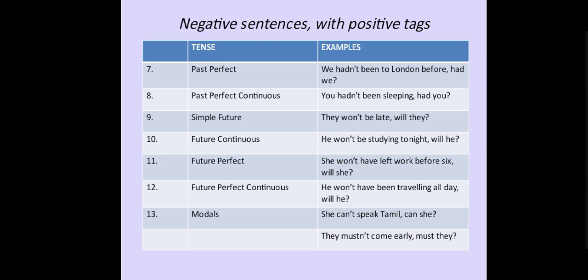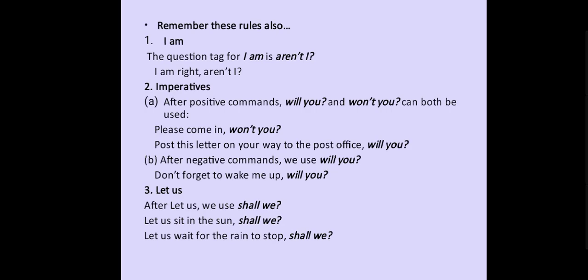For modals with negative sentences — 'She can't speak Tamil, can she?' and 'They must not come early, must they?' Remember these special rules also, children. First, the question tag for 'I am' is 'aren't I?' — for example, 'I am right, aren't I?' For imperatives, after positive commands, 'will you' and 'won't you' can both be used — 'Please come in, won't you?' and 'Post this letter on your way to the post office, will you?' After negative commands, we use 'will you' only — 'Don't forget to wake me up, will you?' When the sentence begins with 'let's', we use 'shall we?' — 'Let us sit in the sun, shall we?' and 'Let us wait for the rain to stop, shall we?'